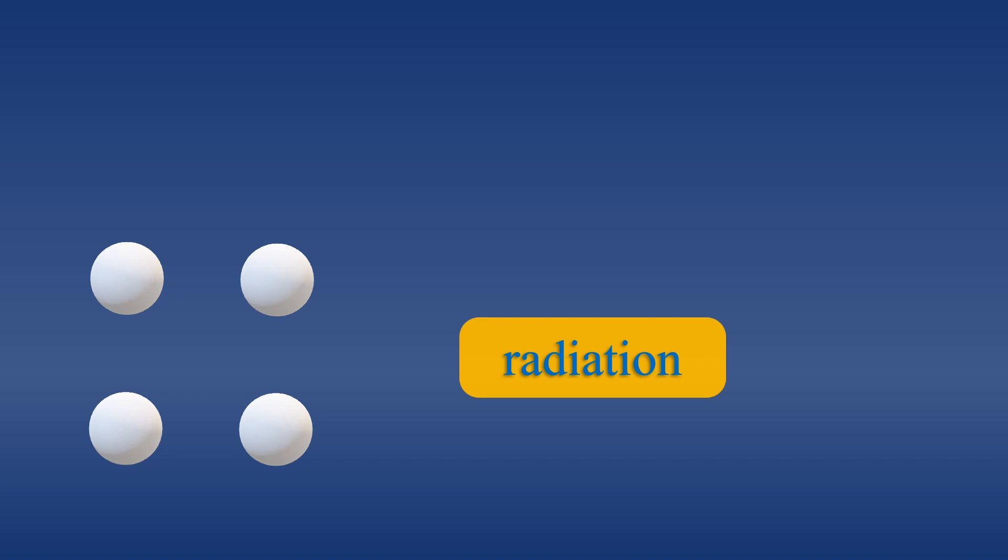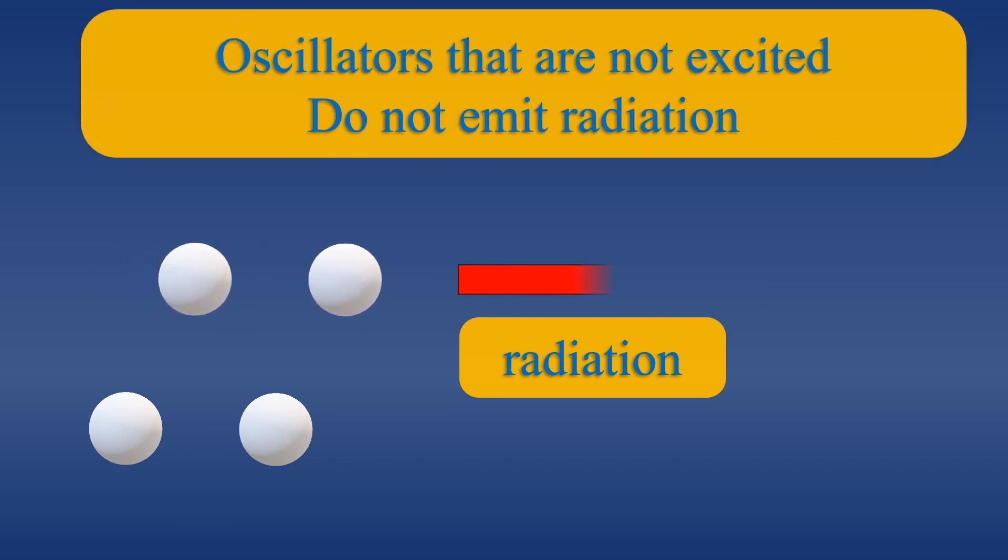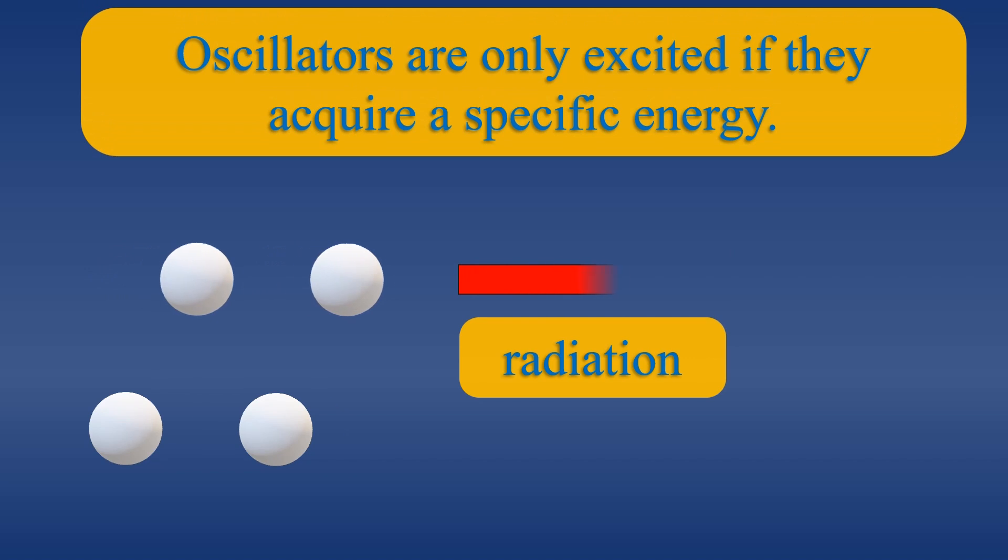And here's the second conclusion. Clearly, there are some oscillators that are not excited and do not emit radiation, contrary to what classical physics suggests. This is because, according to Planck's hypothesis, the electromagnetic oscillators are only excited if they acquire a specific energy.